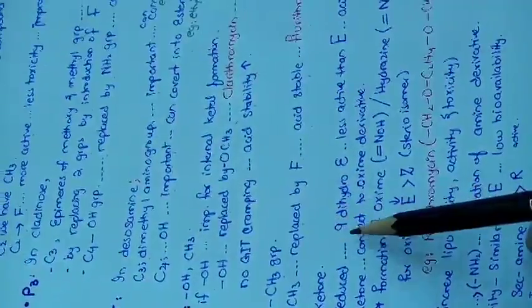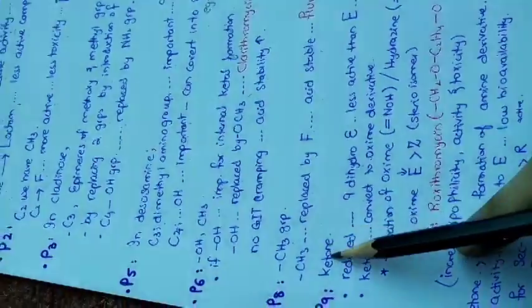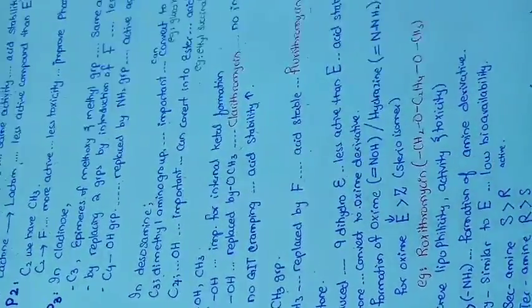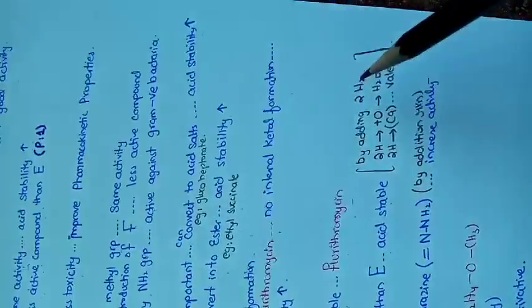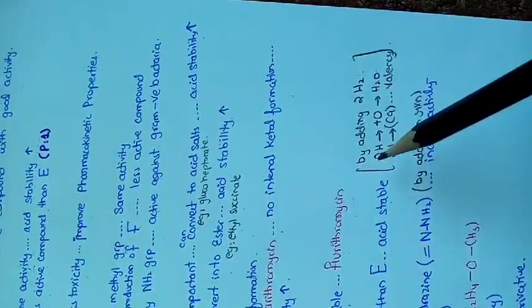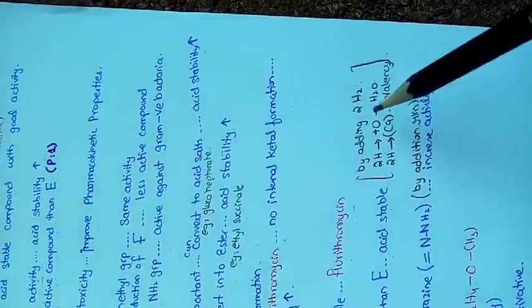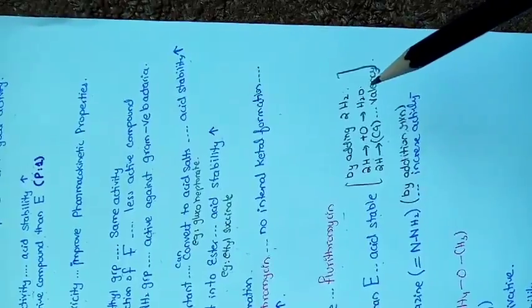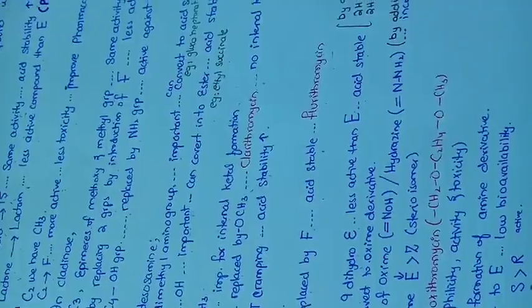Erythromycin also contains a ketone in the lactone ring. If this ketone is reduced to 9,9-dihydroerythromycin, the compound becomes less active than erythromycin but acid stable. Four hydrogen atoms are added at position 9: two combine with oxygen to form water, and the remaining two combine with carbon at position 9 to complete its valency.